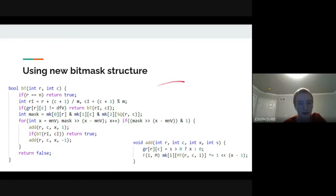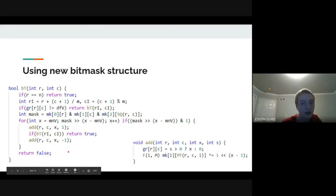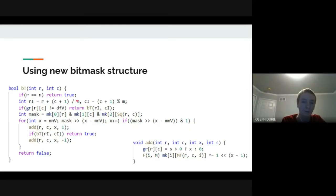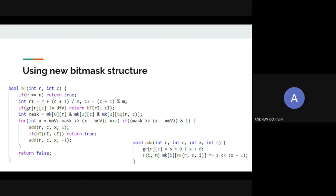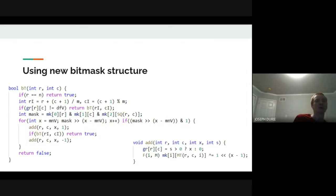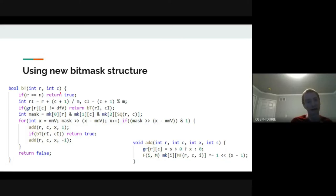Everything else in backtrack stays the same—we've just added the generalized variables. We replace hardcoded 9s with n (columns) and m (rows), check against dfv instead of zero, and so on. Problems are always grids (rectangles), so we can assume consistent row and column counts.